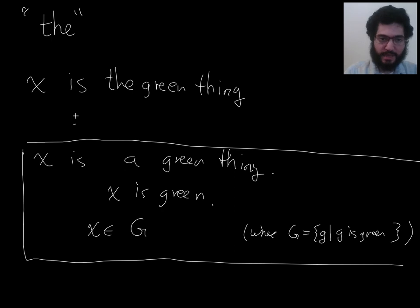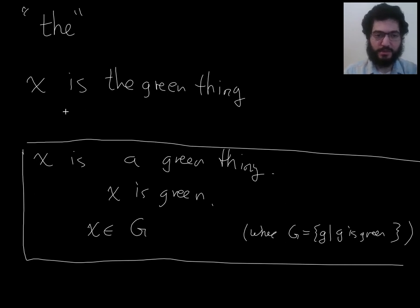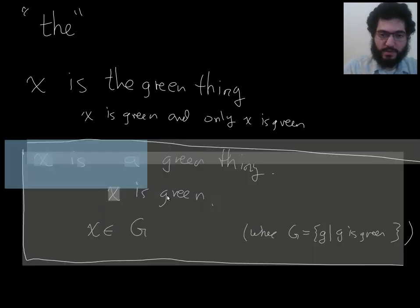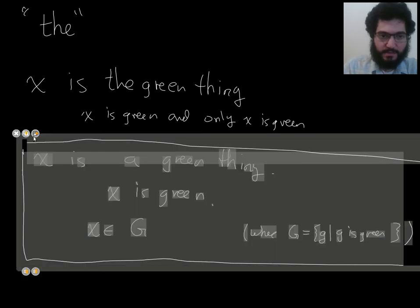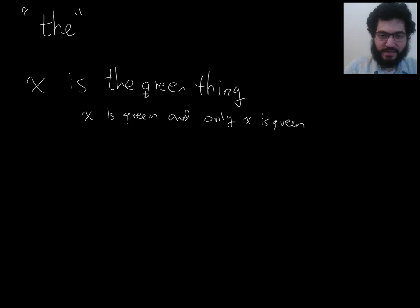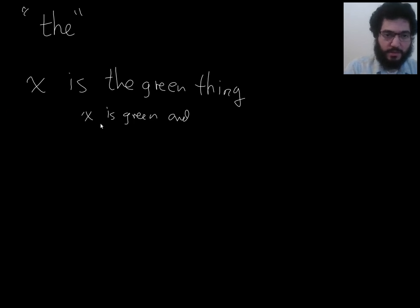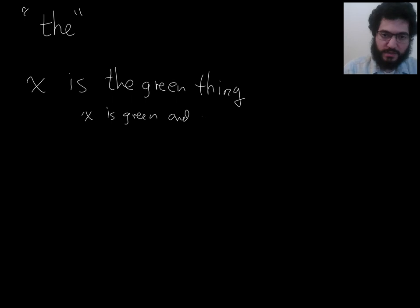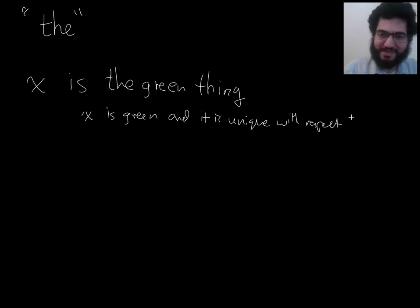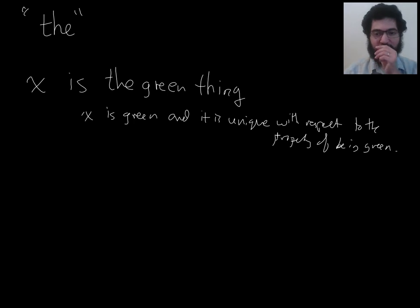In addition to saying something like X is in G, it's also saying that X is the only thing in G. So in English: X is green and only X is green. One word we use is 'unique.' X is the unique green thing. X is green and it is unique with respect to the property of being green. It's green and it is unique in its greenness.